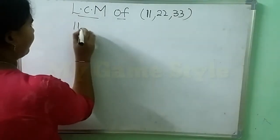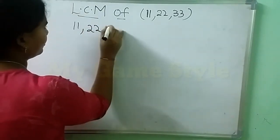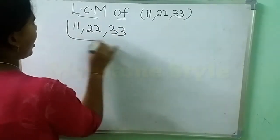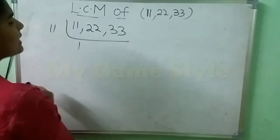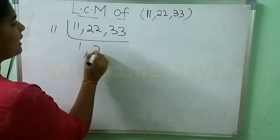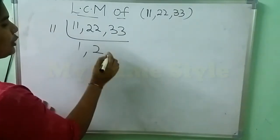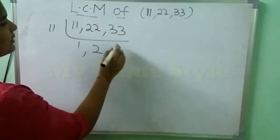Here we are doing the LCM of 11, 22, and 33. Now I am taking 11's table here. 11 times 1 is 11, 11 times 2 is 22, 11 times 3 is 33.